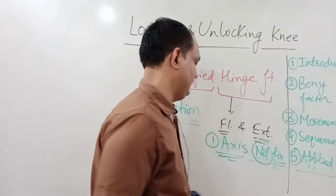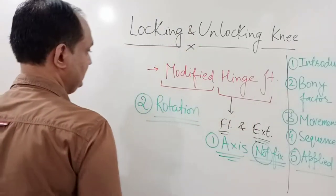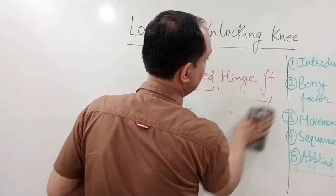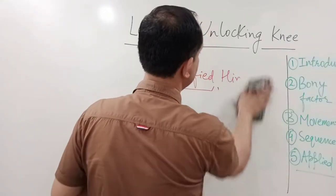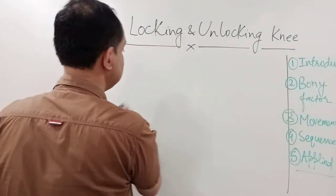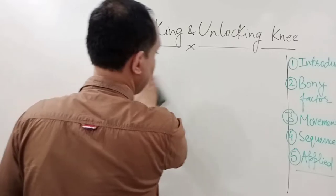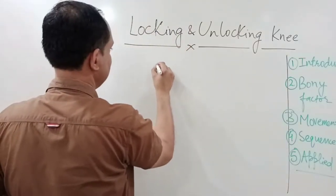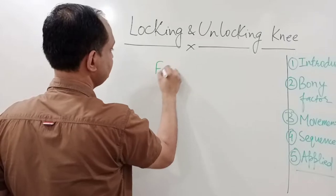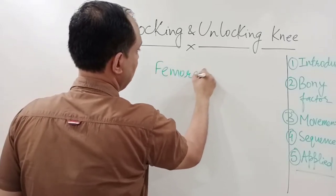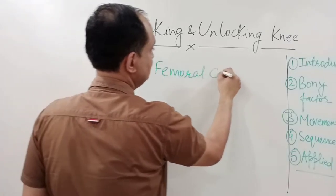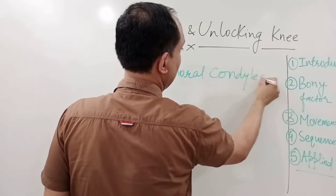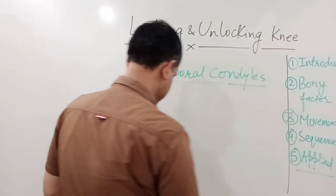Now we will move to the bony factor. For bony factors, you mainly have to write about the femoral condyles and tibial surface. The femoral condyles are responsible for locking and unlocking of the knee joint.